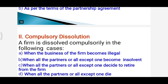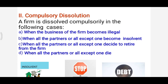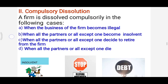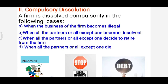The next mode of dissolution is compulsory dissolution. A firm is compulsorily dissolved in the following cases: first, when the business of the firm becomes illegal or unlawful — then it has to be compulsorily dissolved. Another case is when all the partners or all except one become insolvent — those who are not able to pay off their debts. In case of insolvency, the firm has to be compulsorily dissolved.